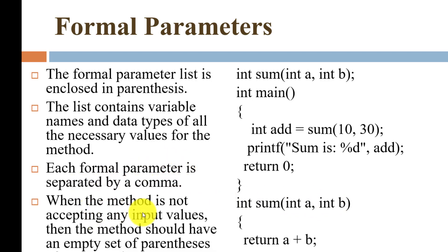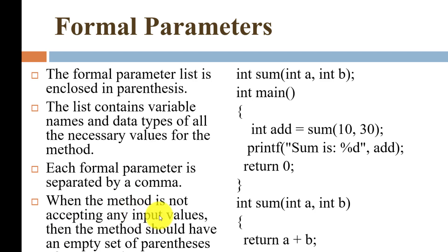Now when the function is not accepting any input values — where a and b are the input values — if the function is not accepting any variables, then the function should have an empty set of parentheses, because we are not passing anything.